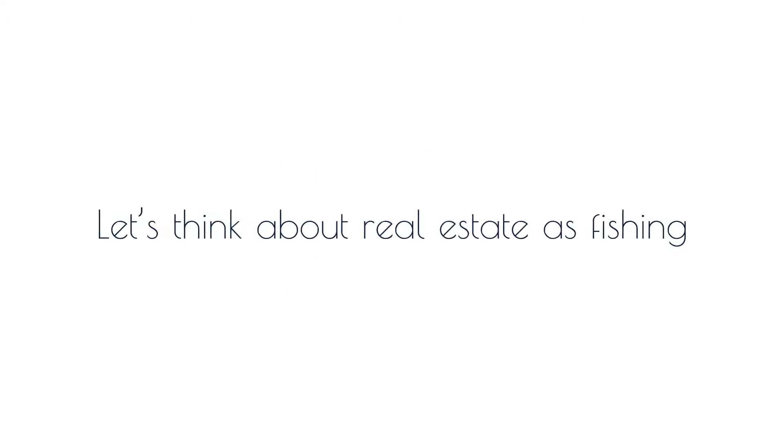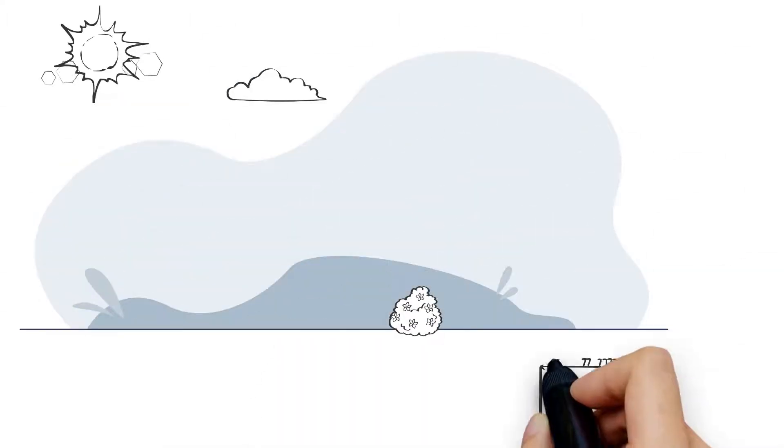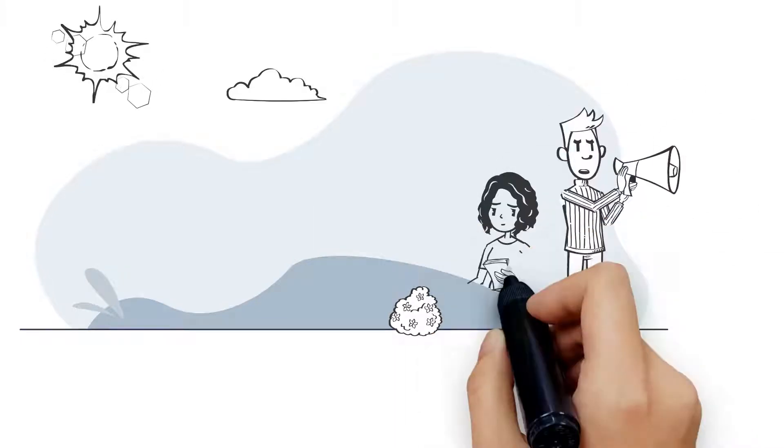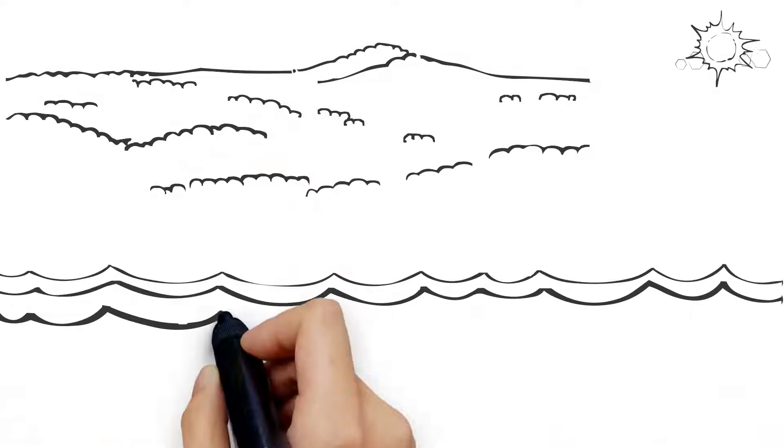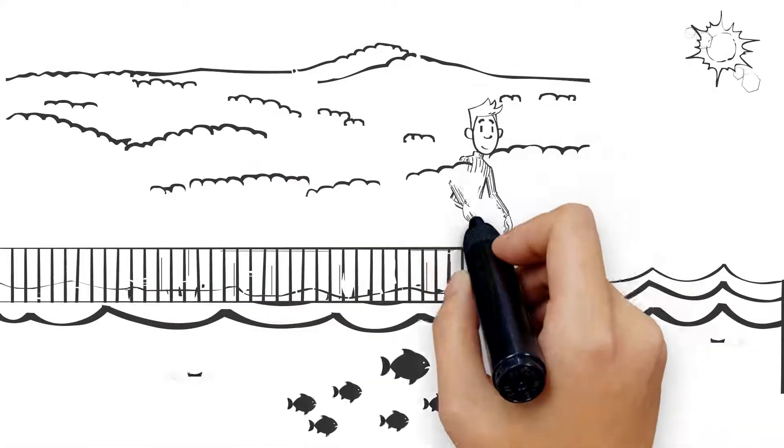Let's think about real estate as fishing. Listing a property traditionally, we go to the market advertising one price, the list price. If we were to compare this to the concept of fishing, we'd be throwing in one fishing rod, one line, one hook.